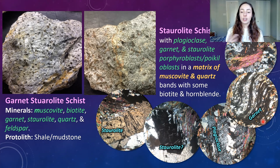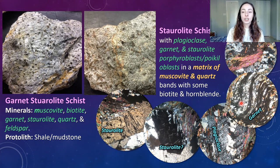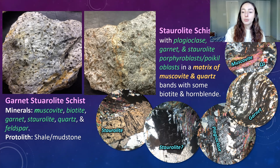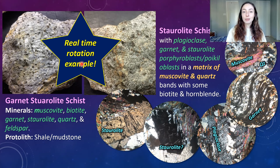Garnet does not have an interference color under cross-polarized light — it remains black or in extinction the entire time you rotate it because it's isotropic. I talk about isotropic versus anisotropic minerals in the optical mineralogy video. Garnet will stay black as we rotate it. The last image has clear muscovite — this bright pink platy mineral band — and then the typical speckly black and white quartz. Now let's look at a real-time rotation example. This is a garnet schist.